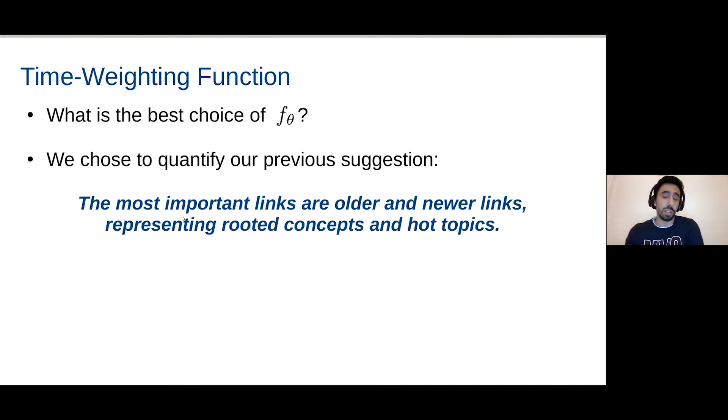And of course, this information about the times can be important, as has already been mentioned in other talks, where old links may represent rooted concepts in the network, like some of the early papers that maybe have a lot more citations over the years, and new links are the hot topics in the field. So what we did was just to take the timestamp of each link, normalize it between for a value between zero and one, and then we define a function f of theta depending on some parameters that would take in the timestamp and produce a weight. Then the question is, what is the best choice of f of theta?